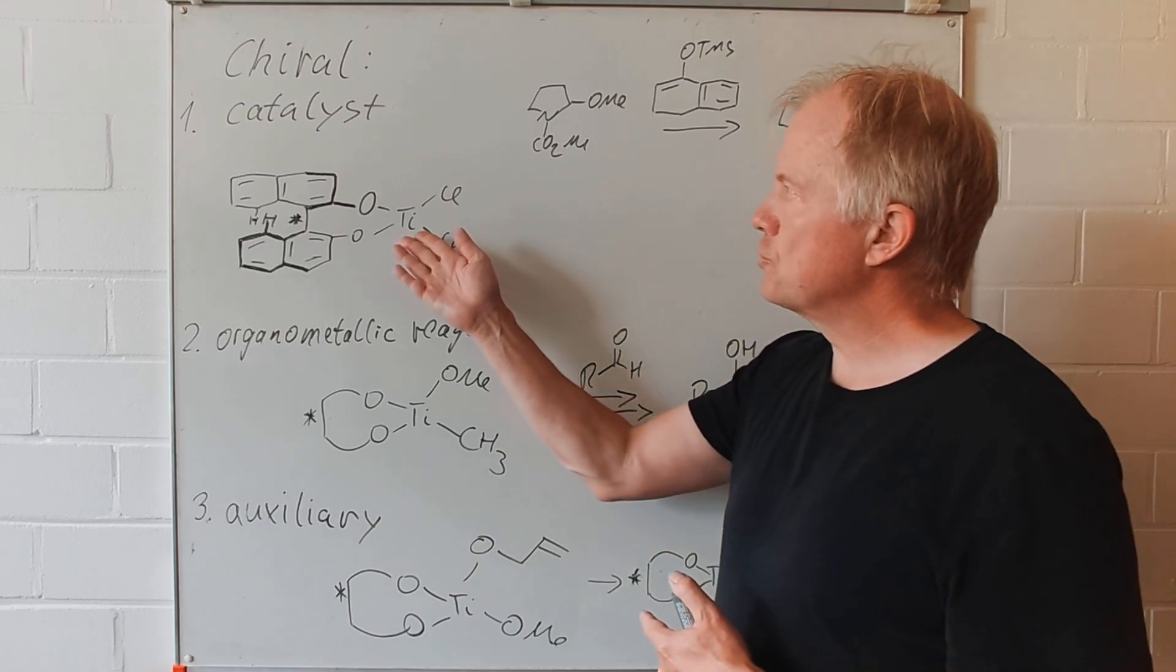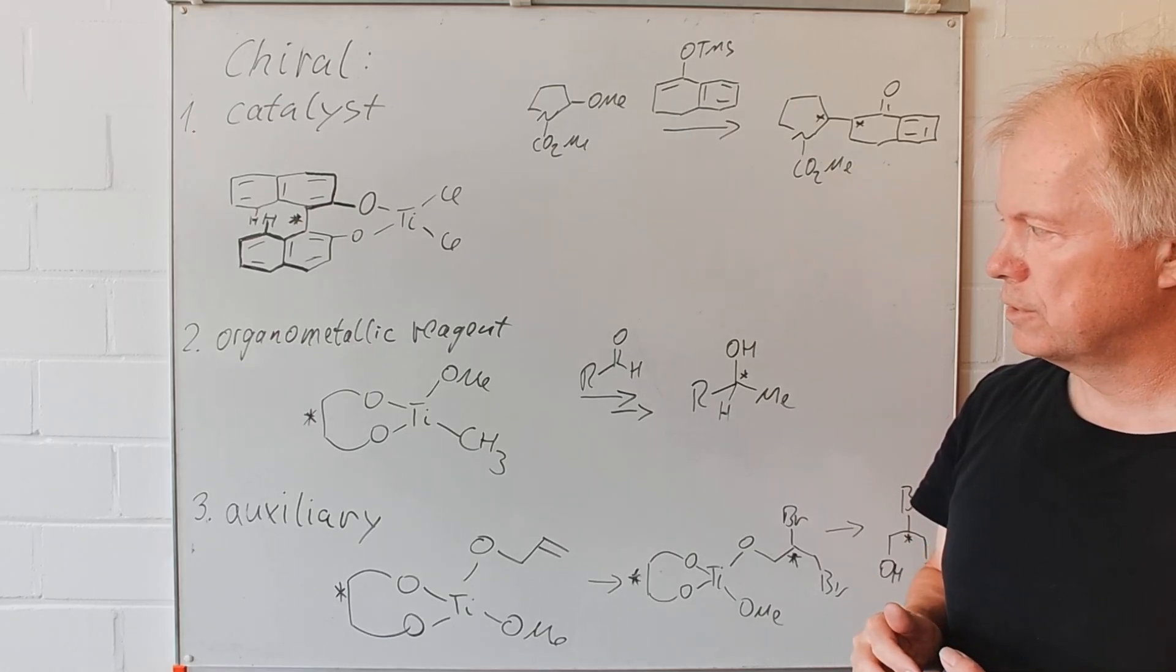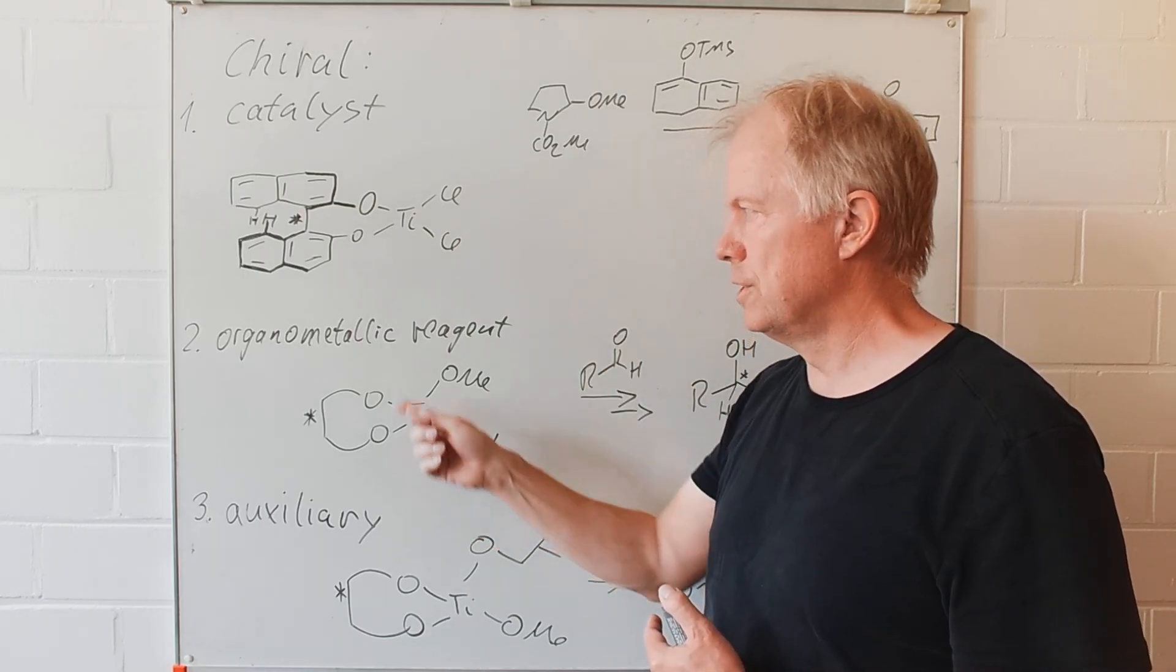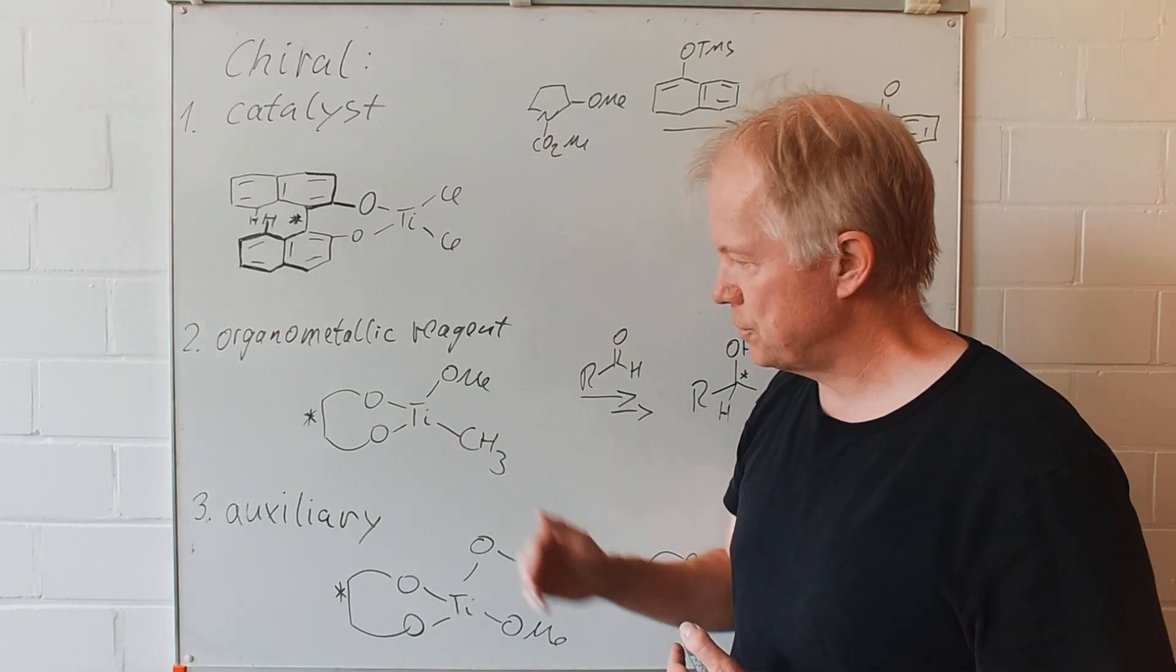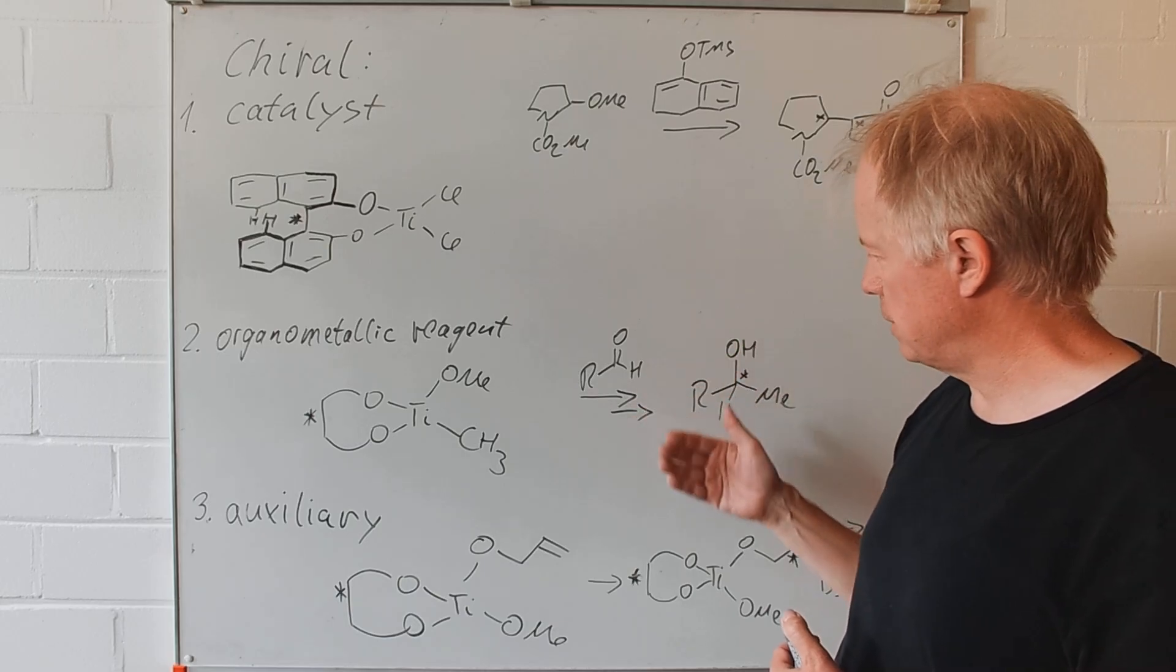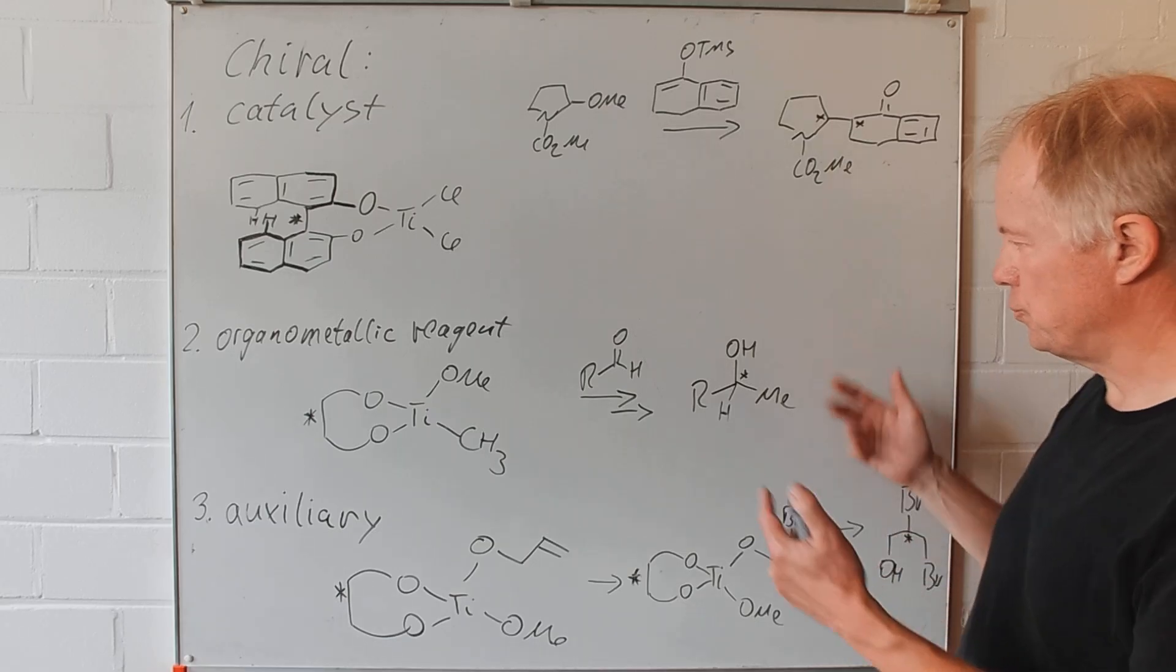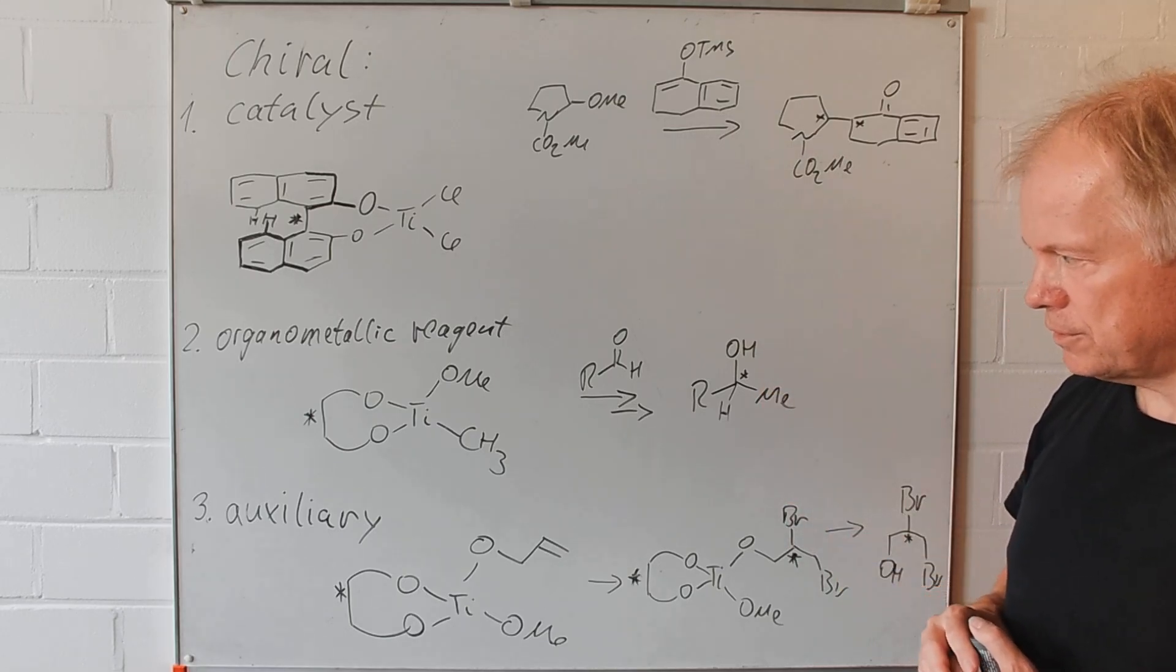Can we transform such a chiral catalyst into an organometallic reagent? Yes, of course, we need to form a titanium-carbon bond so that we have by definition an organometallic reagent. For instance, here the methyl group sitting at the titanium. This would add to an aldehyde and after hydrolysis finally forming a secondary alcohol, presumably well above 90% enantiomeric excess.